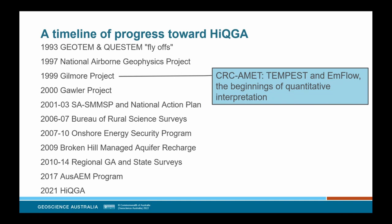The next stage was the Gilmore Project in 1999 when the better calibrated Tempest system, which had been developed in the Australian Mineral Exploration Technologies Cooperative Research Centre, was first flown on a production survey in a joint mineral systems and land management survey. This was our first step towards quantitative AEM. We processed the data with the AEM Flow fast approximate imaging software to generate conductivity depth estimate models. I think the CRC investments by government were critical in getting AEM to where it is today.